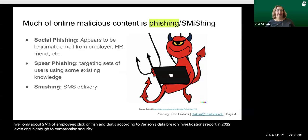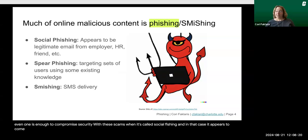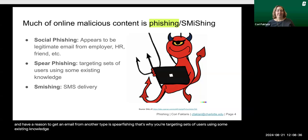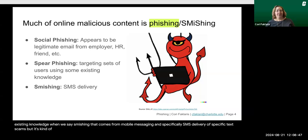There are different types of these scams. One is called social phishing, where the email appears to be legitimate and to come from an employer, HR, a friend, or somebody else you're socially connected to and have a reason to get an email from. Another type is spear phishing, where you're targeting sets of users using some existing knowledge. When we say smishing, that comes from mobile messaging and specifically SMS delivery of text scams, but it's kind of a catch-all term — a lot of times we still say smishing when it is a mobile scam.